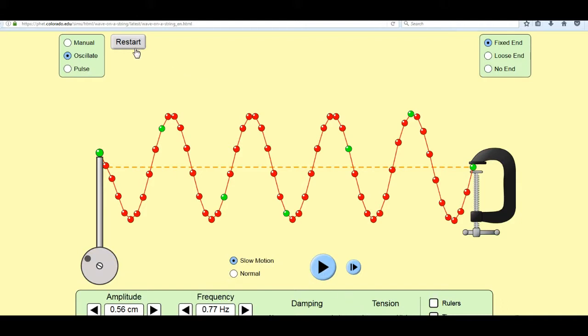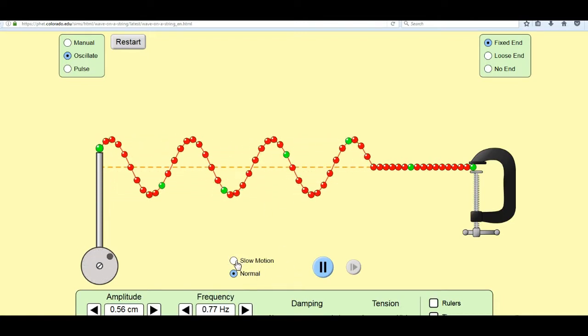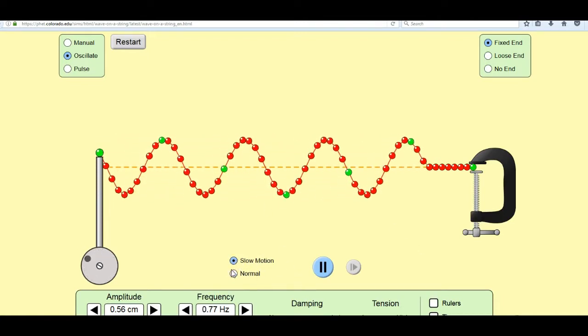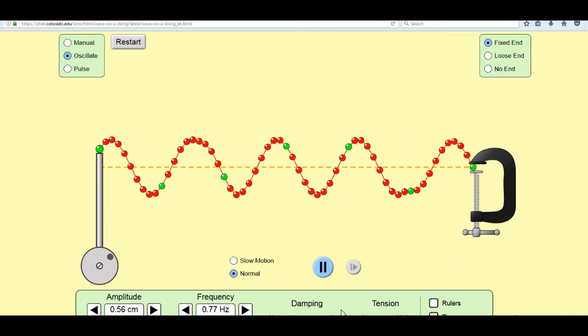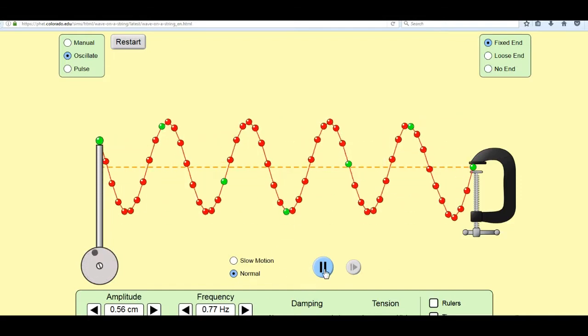Let's watch that one more time. There's a wave traveling to the right. And then there's an identical reflection. When the two interfere, that's what makes the standing wave.